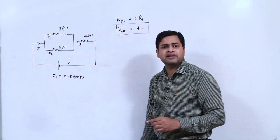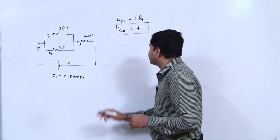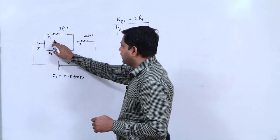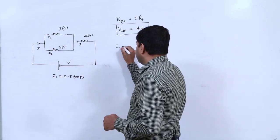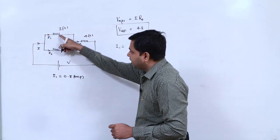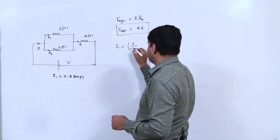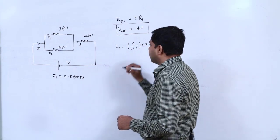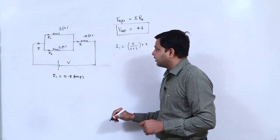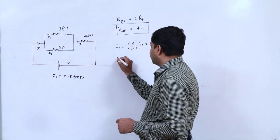Now what do we need to find? We need to find the current value. Now understand, how will current be found? I told you that if we want to find i1 using current division rule, then the opposite resistance divided by total resistance: 6 plus 3, multiply by total current.